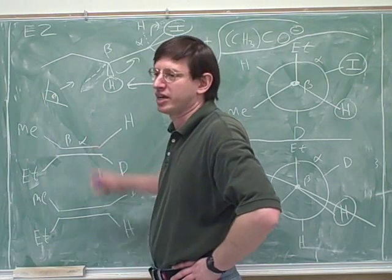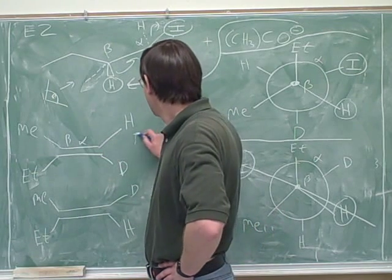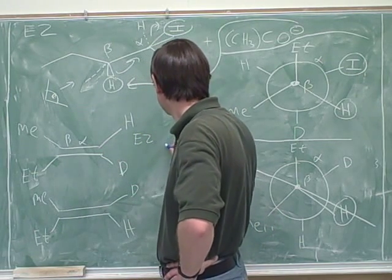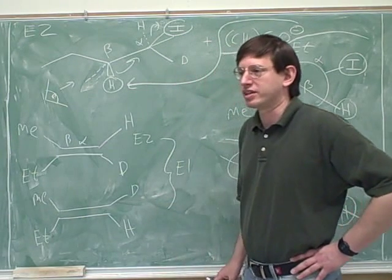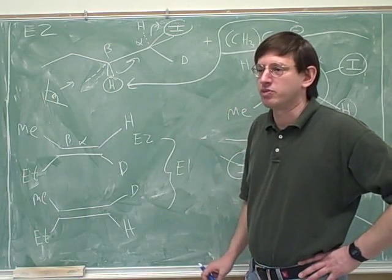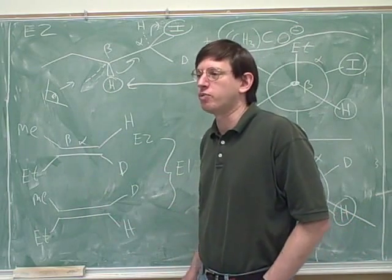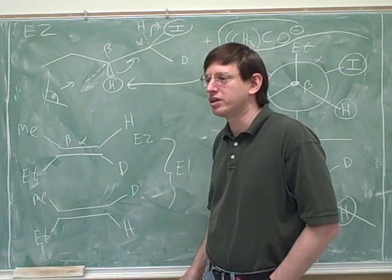E2 gives you only one possible product, and which one do you get? Well, you figure that out from the antiperiplanar transition state. But E1 gives you both possible products. So you don't need to bother with the antiperiplanar transition state for E1. You just go straight to the double bond, draw it one way, and then swap the atoms on one of the carbons.